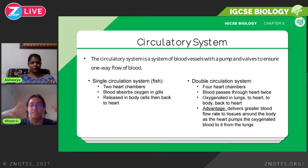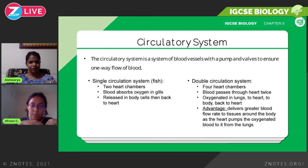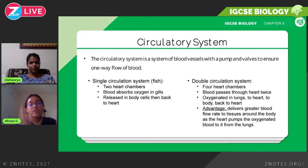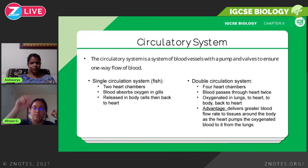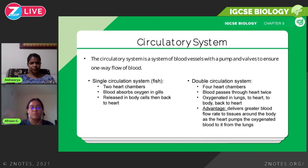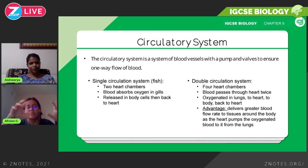Single circulatory systems are found in fishes — they have two heart chambers. The single circulatory system involves two heart chambers; blood absorbs oxygen in the gills, it's released in body cells, and then back to the heart. It takes one circuit from the heart to the body, making a stop at the gills to absorb oxygen, then transporting oxygen throughout the body and returning to the heart.